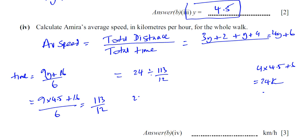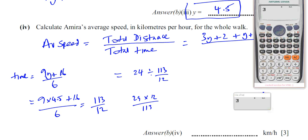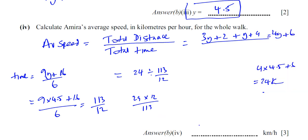So the average speed is 24 times 12 divided by 113, which gives approximately 2.55 kilometers per hour for the whole walk.